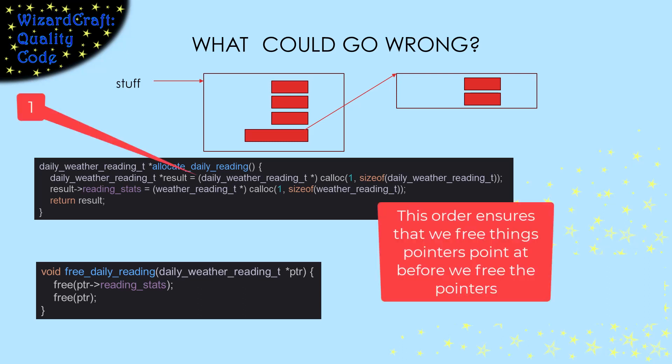In this case, we allocated the daily struct, and then allocated the struct it points at. That means we should free the block it points at, and then free the daily block.